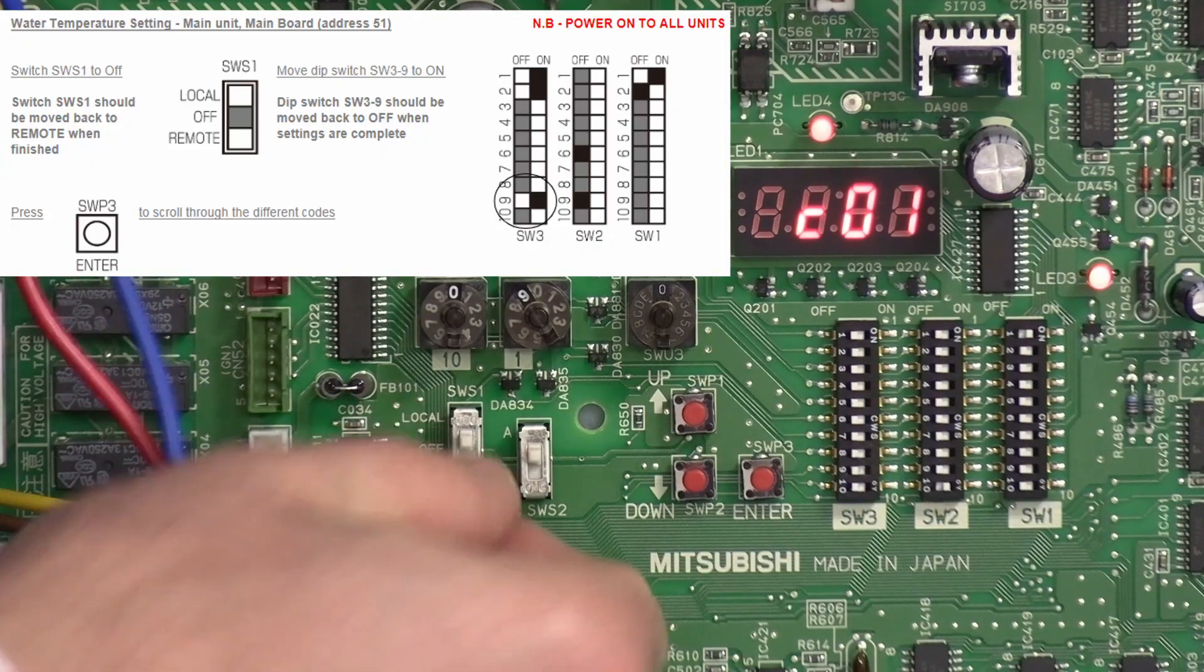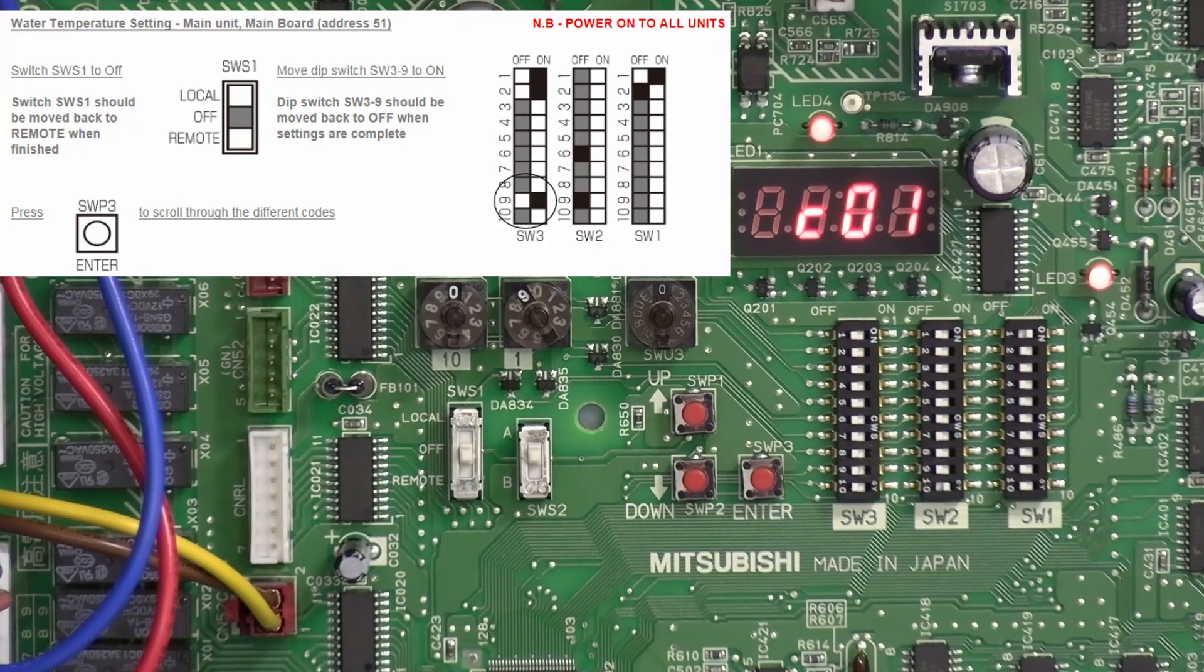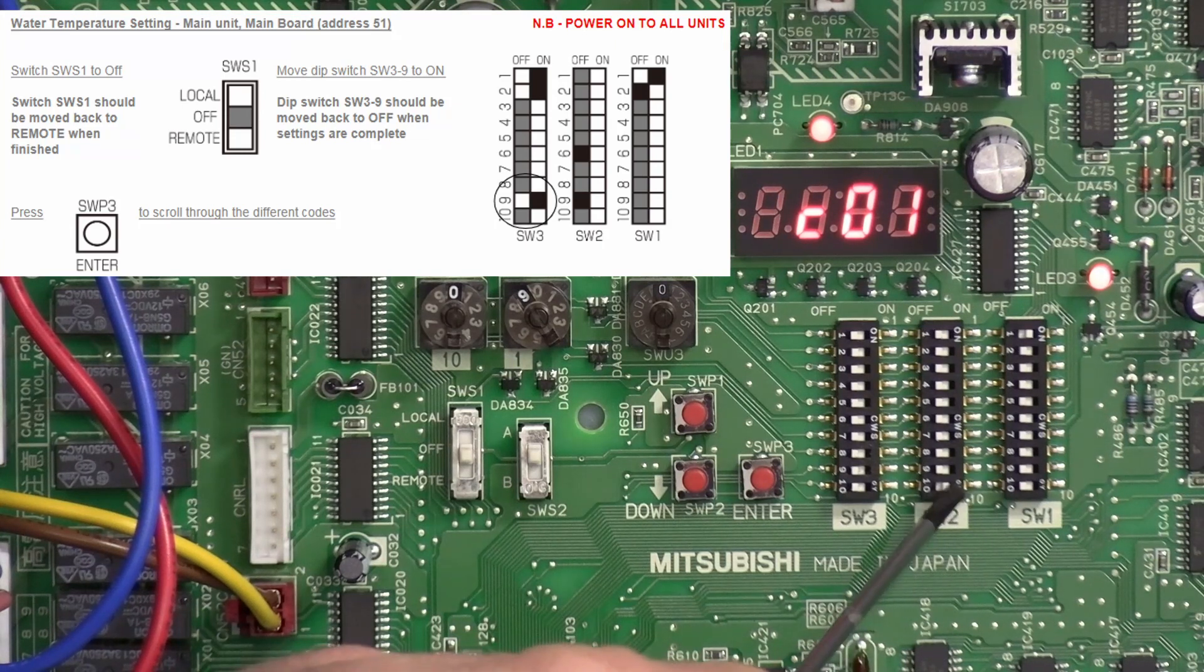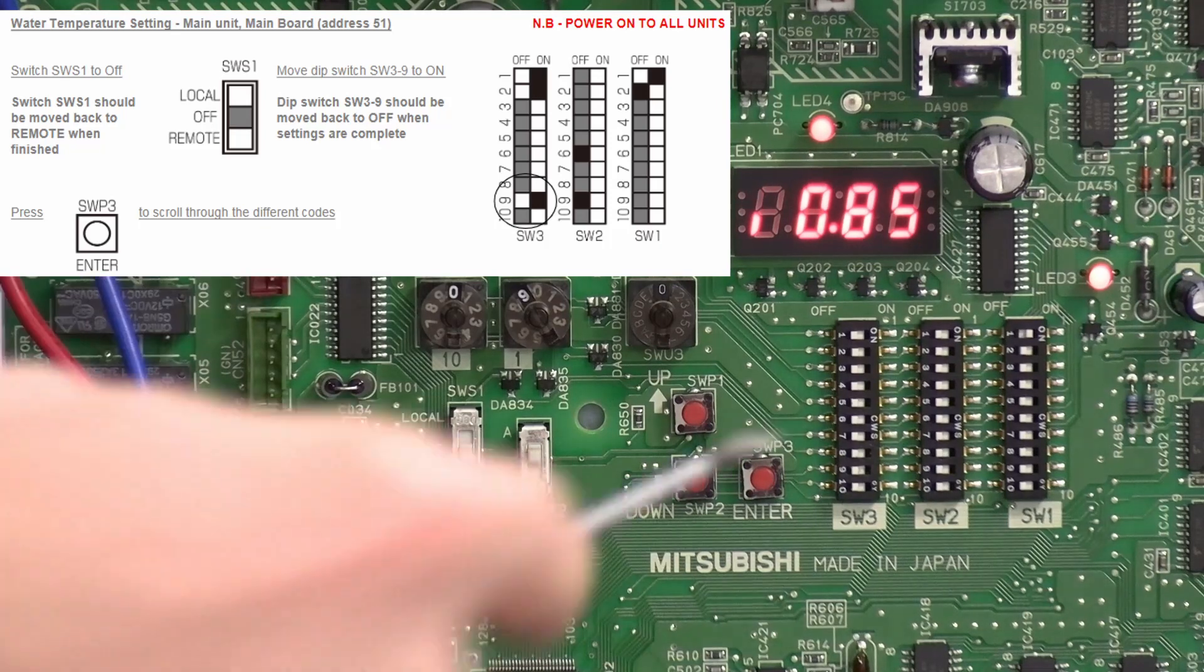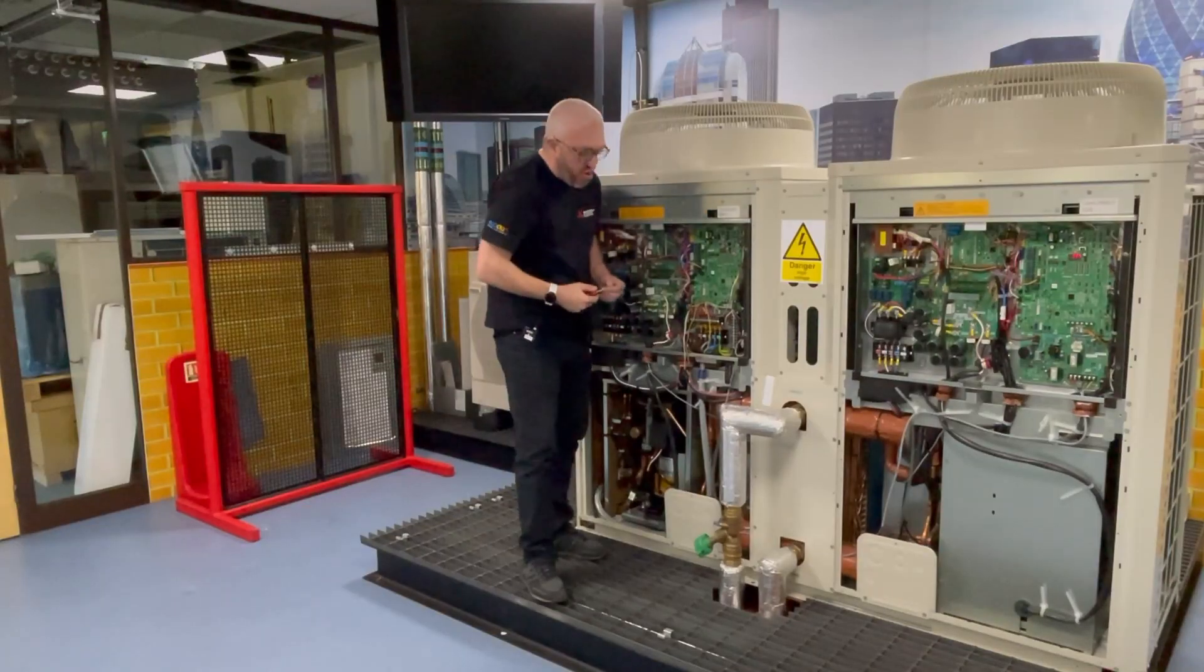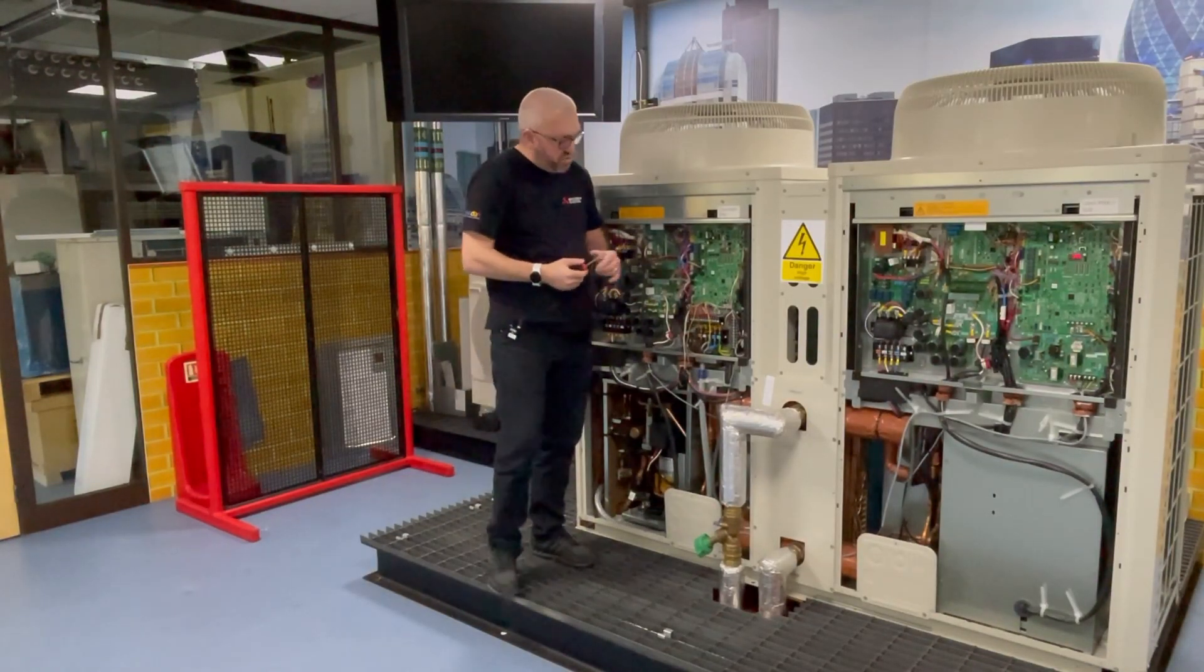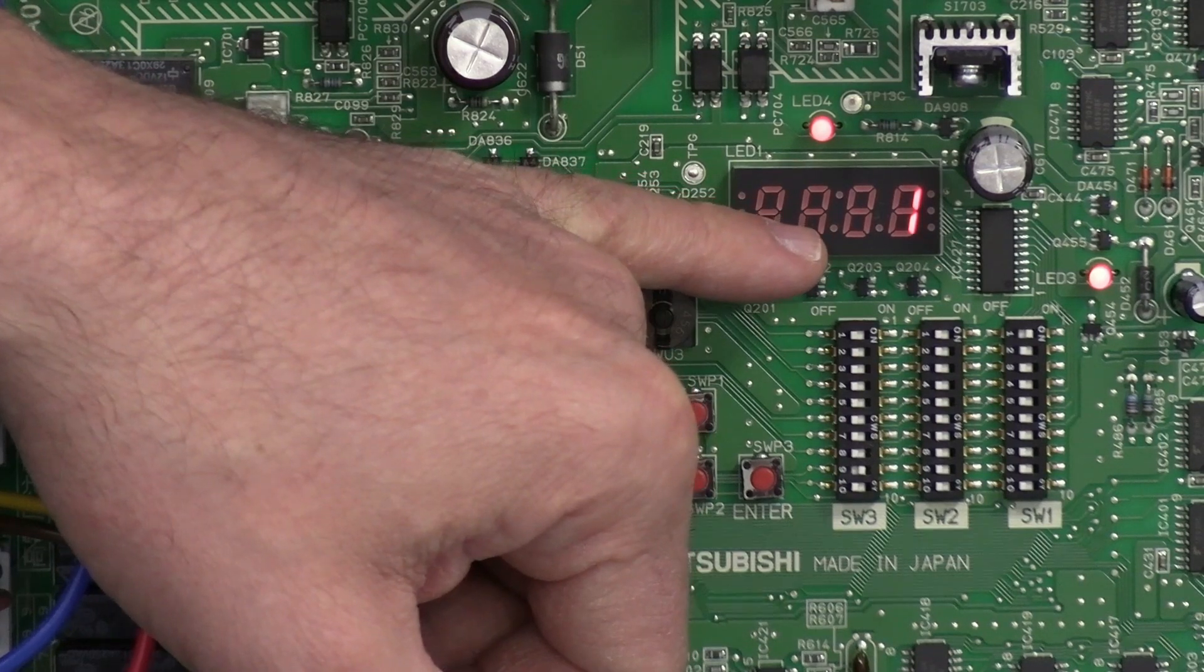First things first, we need to make sure that the SW S1 switch is in the off position, and then SW2 number 10 needs to be moved to the off position also. And then to enter into the setting we need to do SW3 dip switch number nine to the on position. You'll notice now that the LCD display has changed and we've got a number one there.